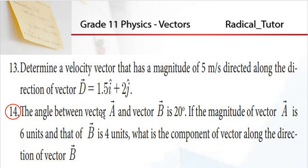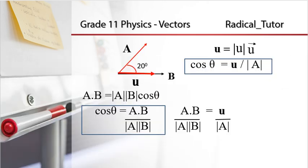Let's see. We have vector A and vector B. Graphically, this is vector A and this is vector B. We need to find the projection — the amount of A in the direction of B. Here, vector A projected in the direction of vector B.